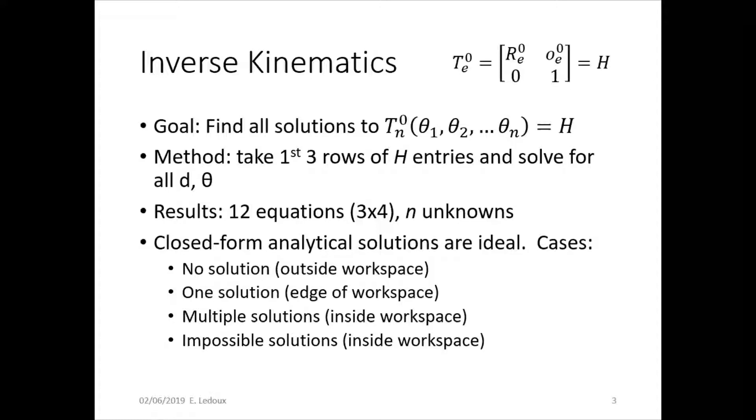So the result of these is 12 equations, because there will be one equation for each spot in the matrix. Three rows, four columns, and then n unknowns, where n is the number of joints. Closed form analytical solutions are ideal.